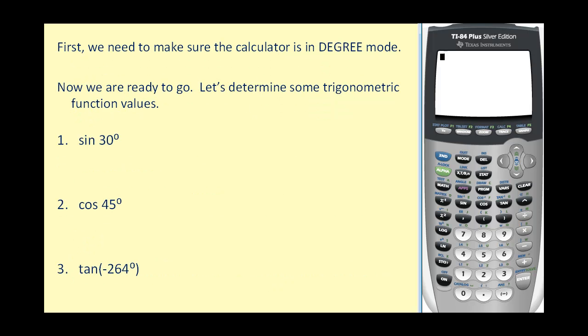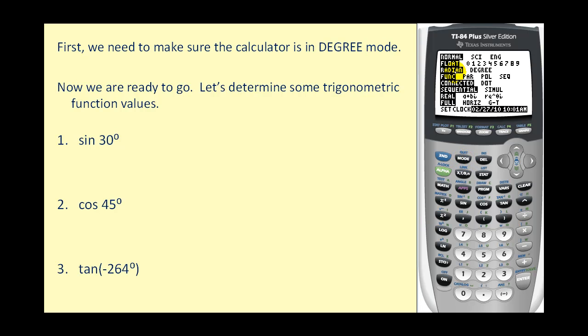The first thing we need to do is make sure that our calculator is in degree mode. If we press the mode key, the third row has the option of radians or degrees. So if we press down to the third row, right arrow once over to degrees, we need to press enter. And now it's in degree mode. If we press second mode, which is the quit function, we're back at the home screen and we're ready to go.